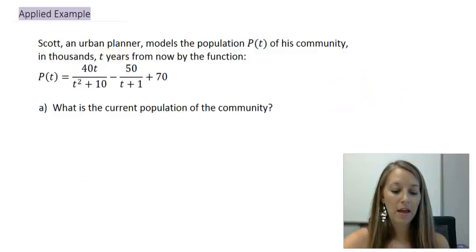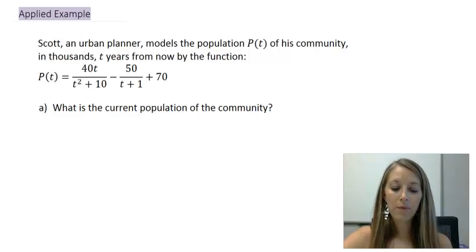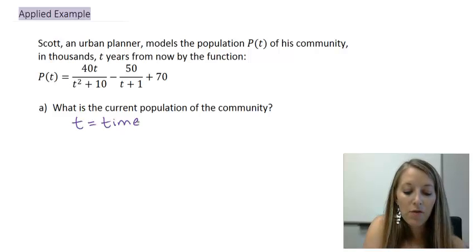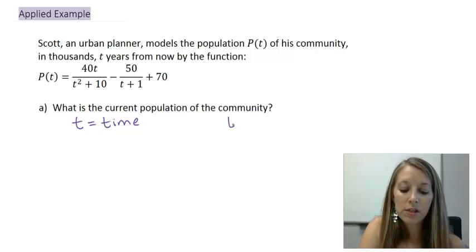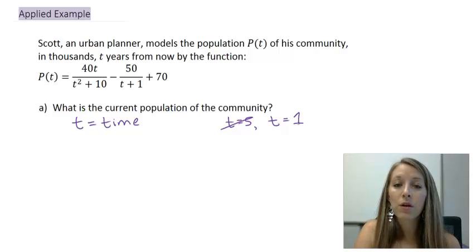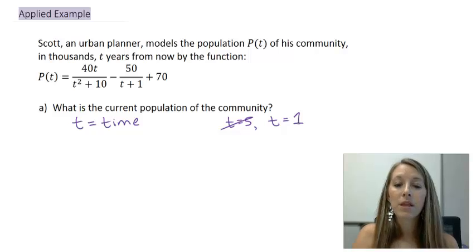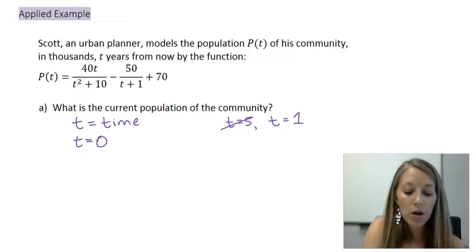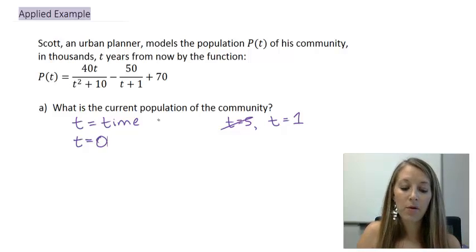Let's focus on part A: what is the current population of the community? We have to plug in something for T. Remember, T represents time in years. If we want the population five years from now, we let T = 5. A frequent mistake is substituting T = 1 for the current population, but that actually computes the population one year from now. If we want the population right now, time hasn't advanced, so we substitute T = 0 — zero years from now.